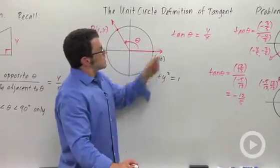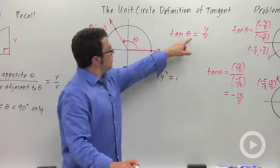Again, this is the unit circle definition of tangent: y over x, where y and x are the coordinates of point P.